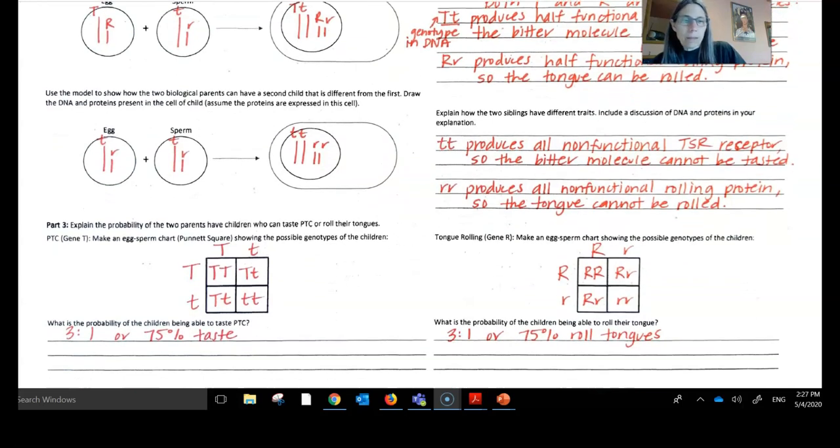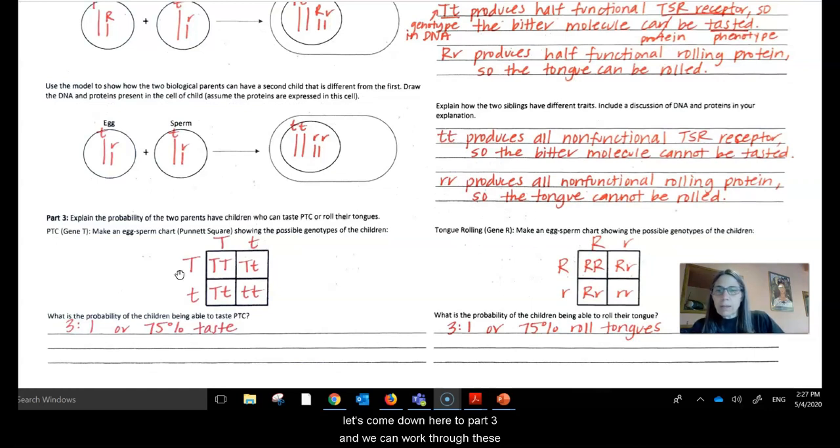So let's come down here to part three, and we can work through these Punnett squares, or sometimes called an egg and sperm chart, and so we see here one parent's gamete contribution, the other parent's gamete contribution. These are the potential gamete combinations or fused zygote combinations here, and so what do we end up seeing? That there's three situations in which the outcome will be a genotype that produces tasting. So that's three to one or 75% chance that if these are the gametes that come together, you're going to end up with an offspring who can taste PTC.